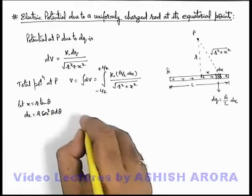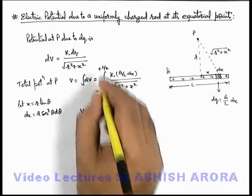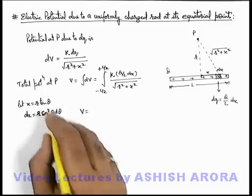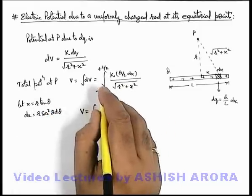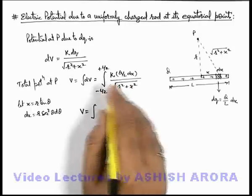If we substitute the values, I'll omit these limits till I am operating on θ. We'll resubstitute the limit when we'll convert θ to x later.